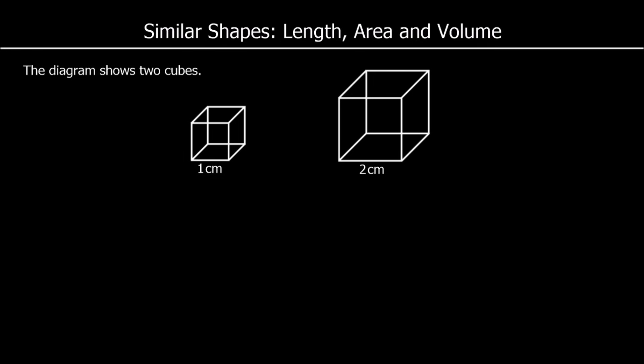We can say that two shapes are similar if there's been a uniform enlargement, so all of the lengths of a shape have been multiplied by the same scale factor. Here I've got two cubes, and cubes are always similar shapes. Because if you didn't multiply them by the same scale factor — if you multiplied the width by 5 but the height by 2 — it would no longer be a cube.